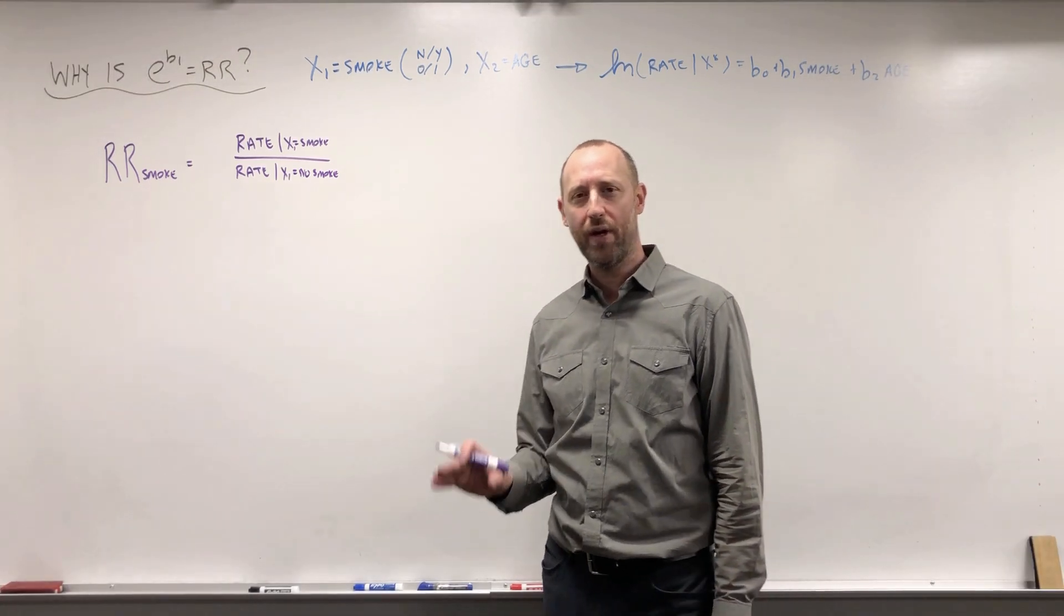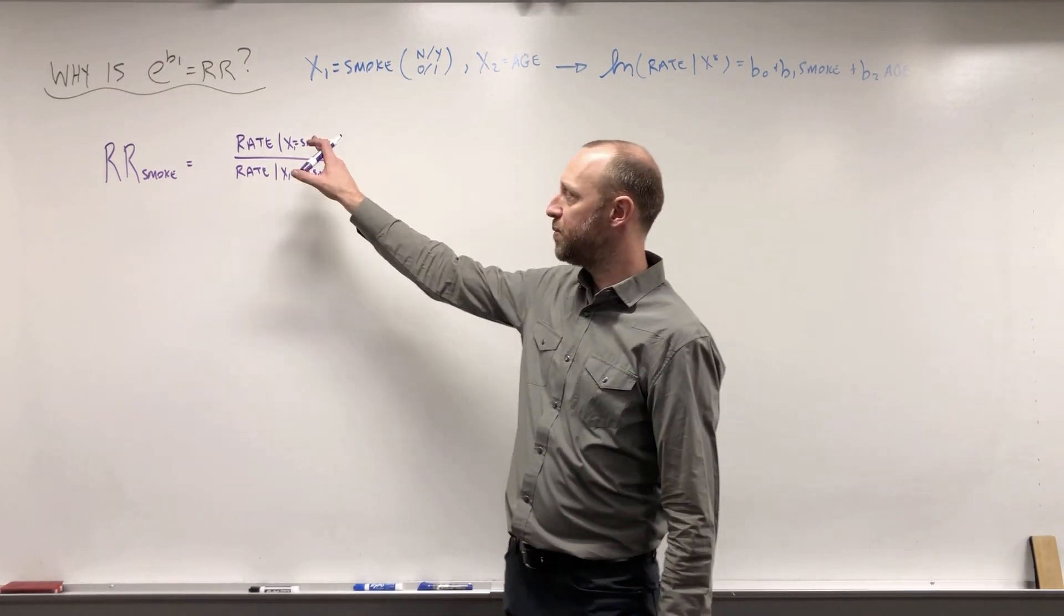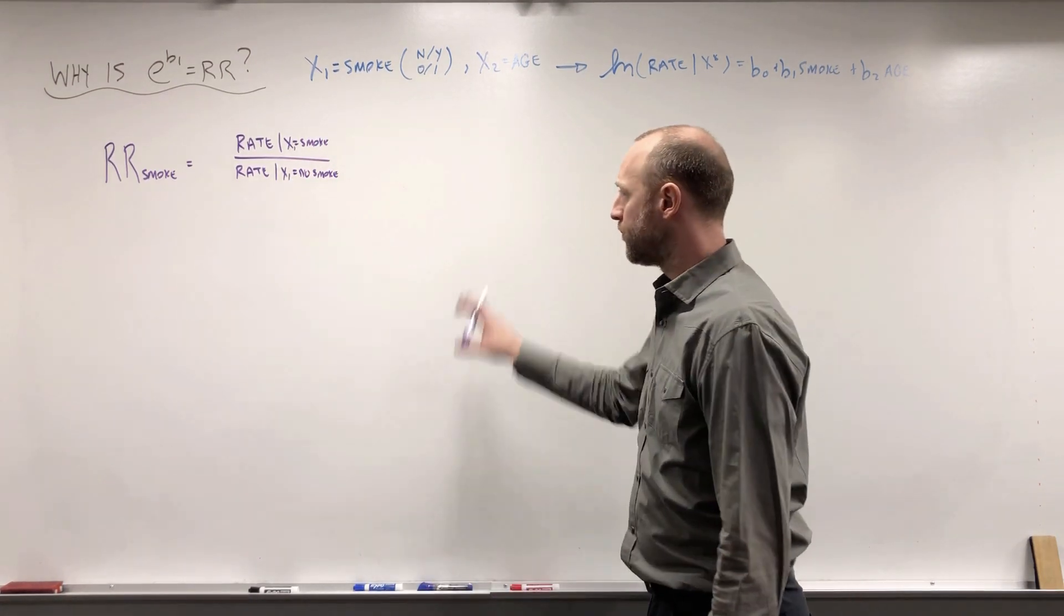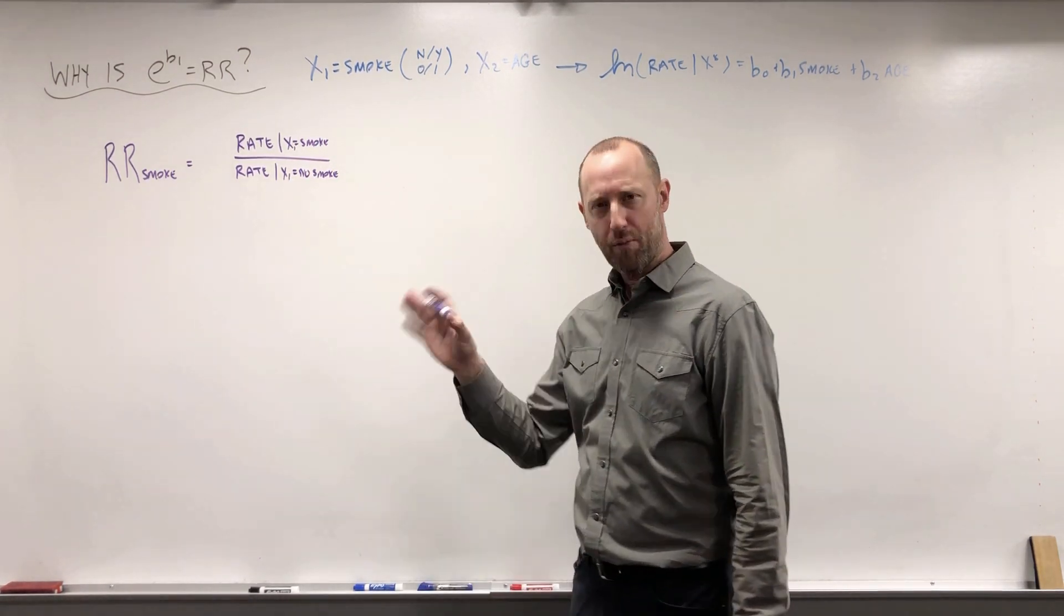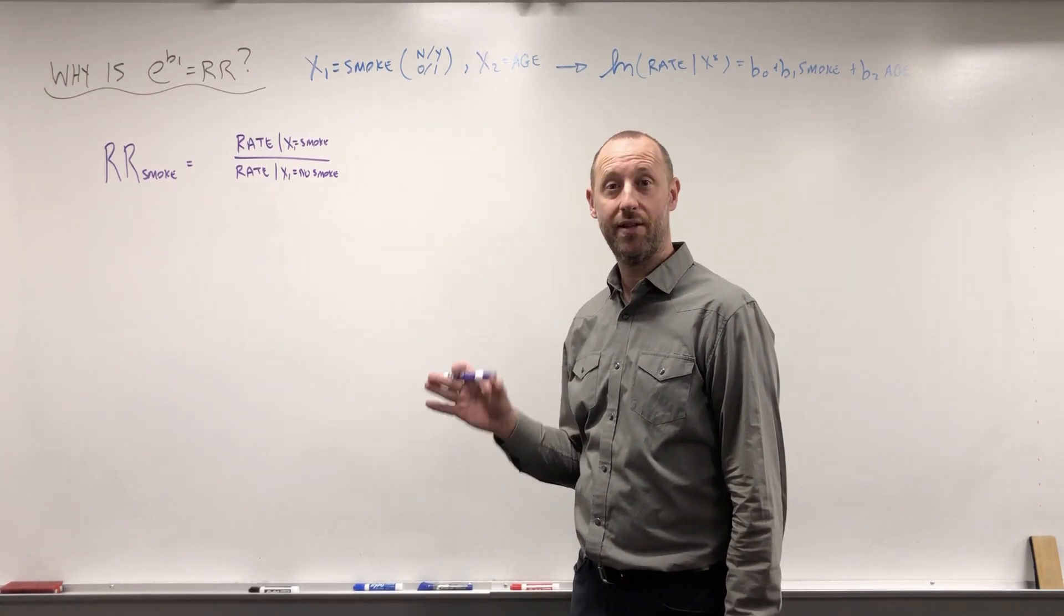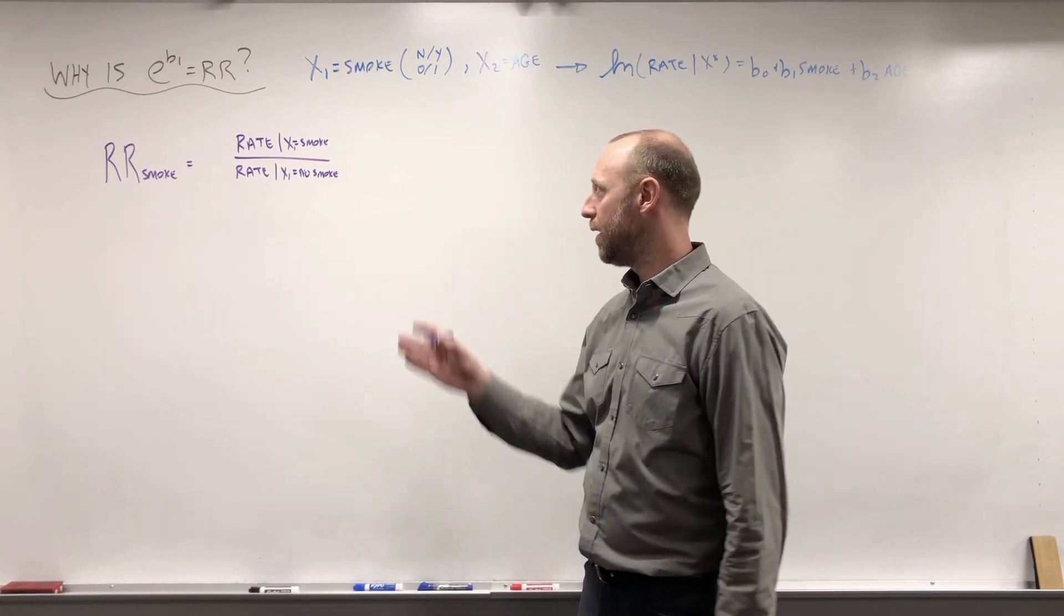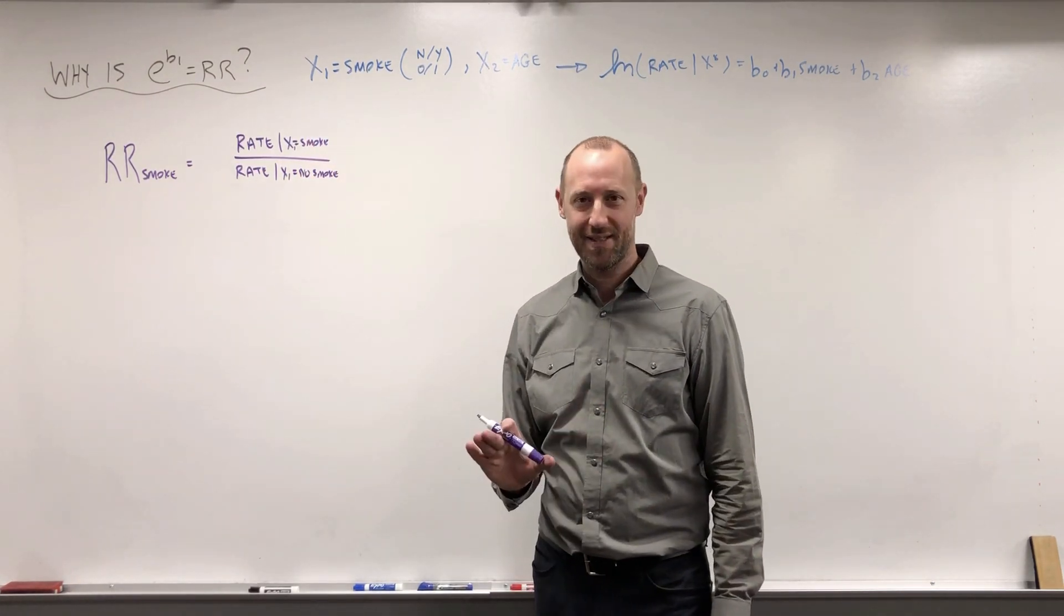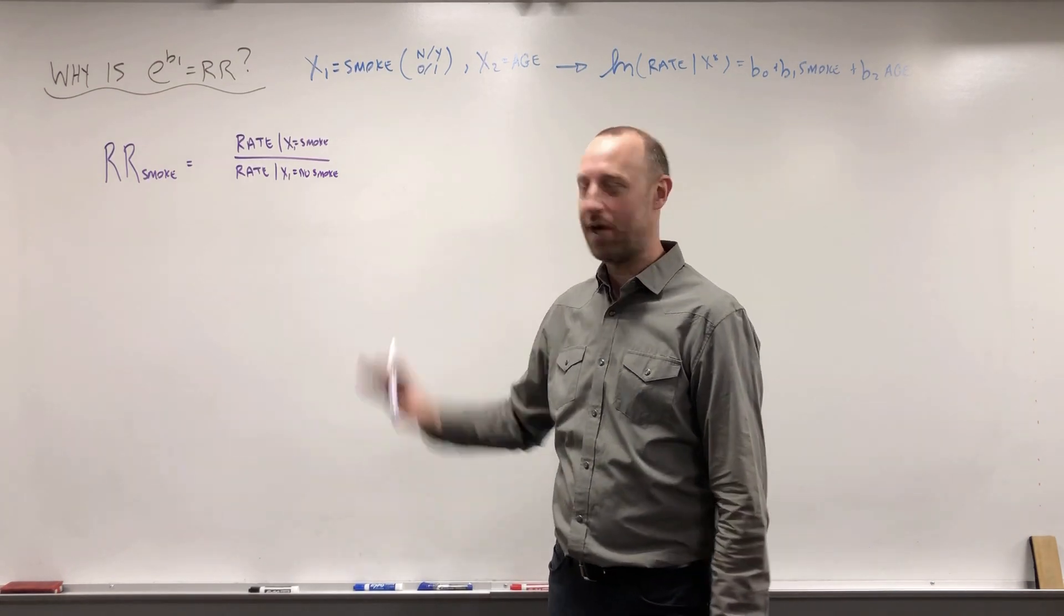In this video we're going to go over a quick explanation of why exponentiating the coefficients gives us rate ratios. I'm going to move a bit more quickly as we've gone through a very similar explanation when looking at logistic regression and exponentiating the coefficient to get odds ratios. So we're going to do the exact same explanation here just with Poisson regression.